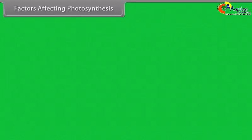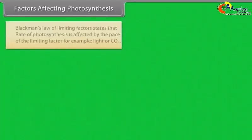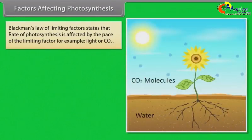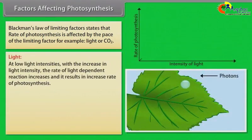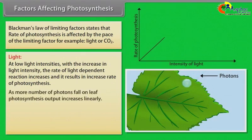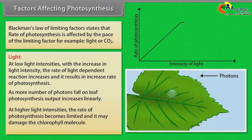Factors affecting photosynthesis: Blackman's law of limiting factors states that the rate of photosynthesis is affected by the pace of the limiting factor. For example, light or CO2. Light: At low light intensities, with the increase in light intensity, the rate of light-dependent reaction increases, resulting in increased rate of photosynthesis. As more photons fall on the leaf, photosynthesis output increases linearly. At higher light intensities, the rate of photosynthesis becomes limited and it may damage the chlorophyll molecule.